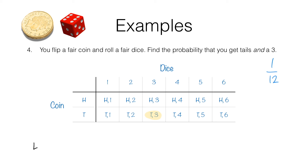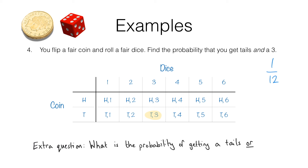You might like to try an extra question — pause the video and have a go. Here's the answer. We are interested in outcomes that have a tails or a three, or both. The outcomes with tails are: T1, T2, T3, T4, T5, T6 — that's six outcomes. But we're also interested in H3, because it has a three even though it doesn't have a tails. So altogether we've got seven outcomes out of 12 that involve getting a tails or a three or both. Therefore the probability is seven twelfths.